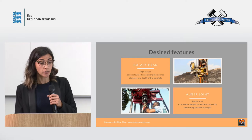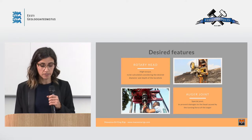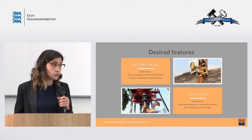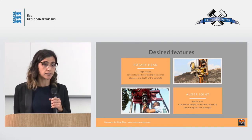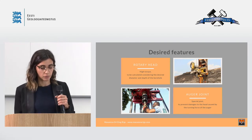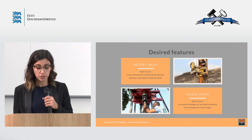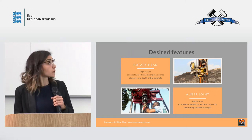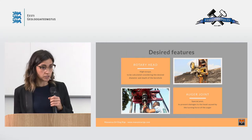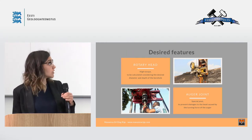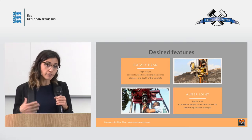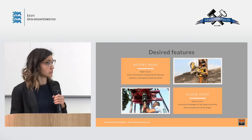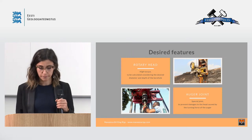What is needed on the drilling rig to perform this kind of technique? First of all, a rotary head with high torque is necessary. The torque capacity must be calculated considering the desired depth and diameter that the driller wants to reach. Then, of course, you need an auger joint — a cardan — to be added below the rotary head to connect the augers and avoid the turning force of the augers affecting the rotary head.